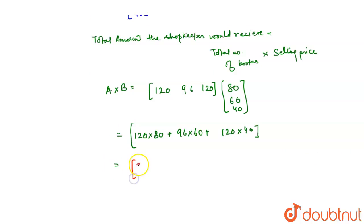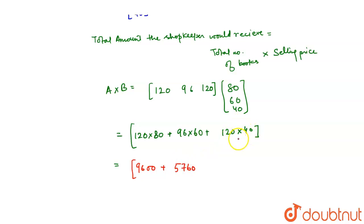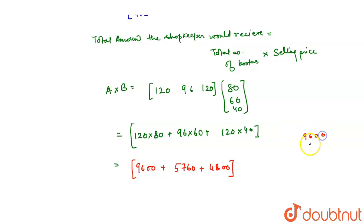Computing: 120 into 80 is 9,600. 96 into 60 is 5,760. And 120 into 40 is 4,800. Adding these together: 9,600 + 5,760 + 4,800 gives us 20,160.